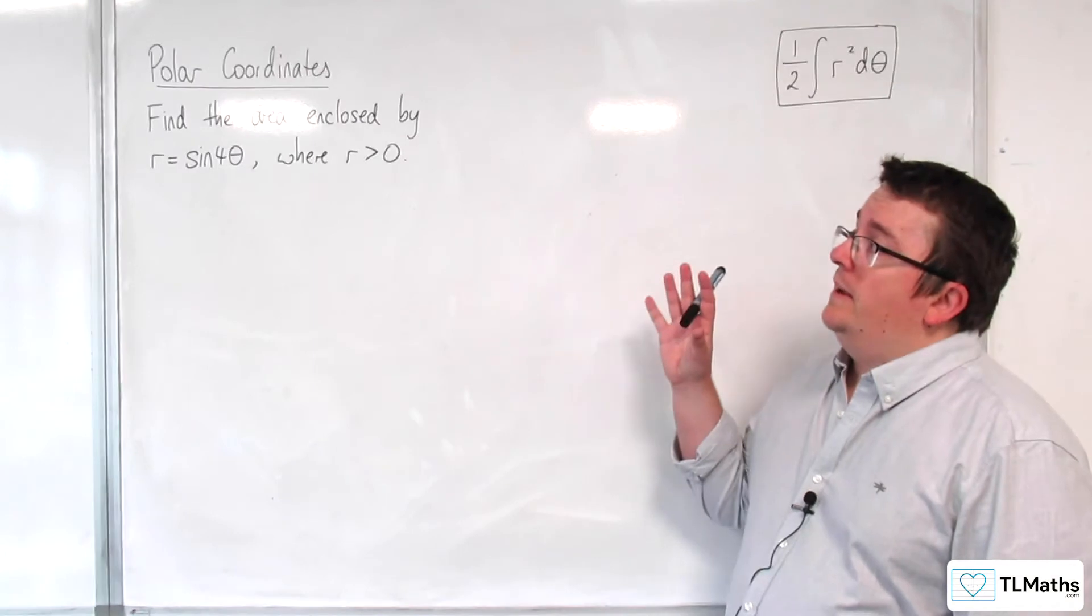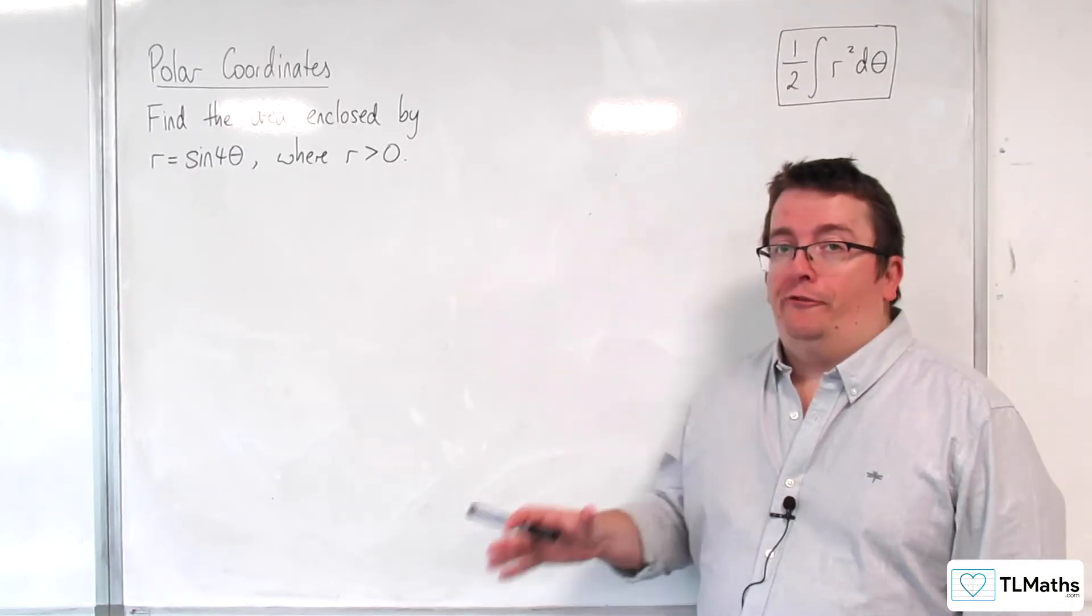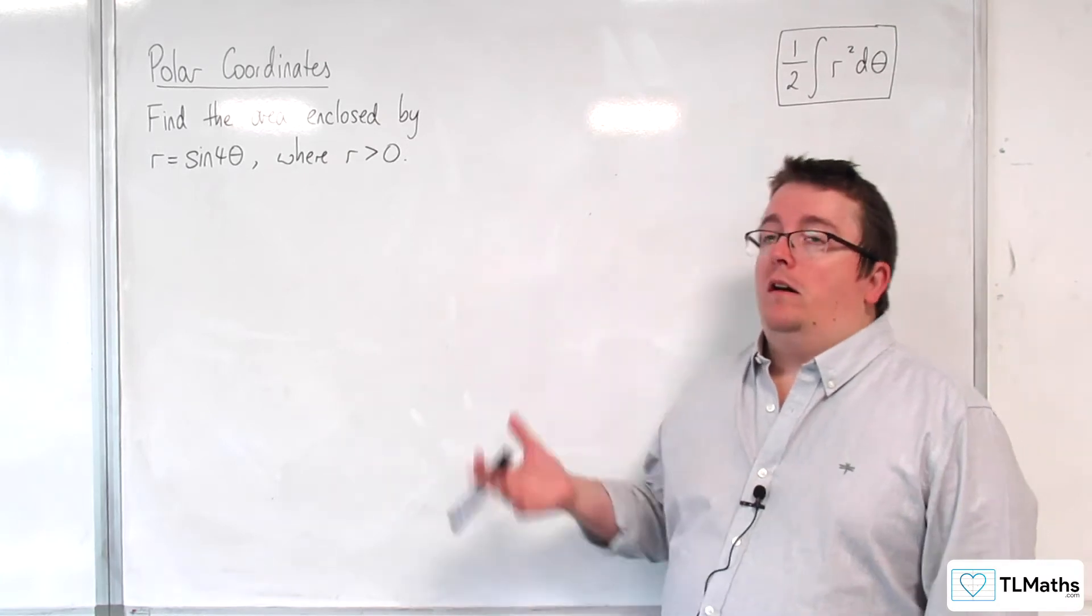So, in this video, what we're looking at is finding the area enclosed by r equals sine of 4 theta, where r is positive.